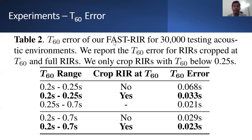In this table, we report the reverberation time error of fast RIR. We see that the testing reverberation time error is high for input T60 below 0.25 seconds compared to input T60 greater than 0.25 seconds. Fast RIR is trained to generate room impulse responses with durations slightly above 0.25 seconds. For reverberation times below 0.25 seconds, the generated room impulse responses have a noisy output between the reverberation time and 0.25 seconds. Cropping the generated room impulse responses at the reverberation time improves the overall reverberation time error from 0.029 seconds to 0.023 seconds.